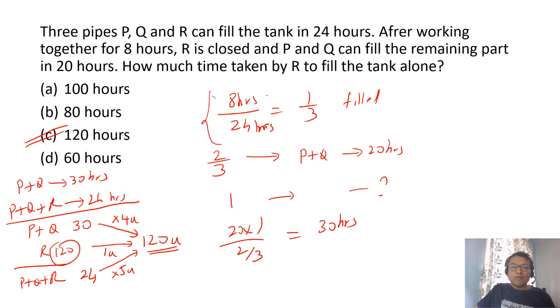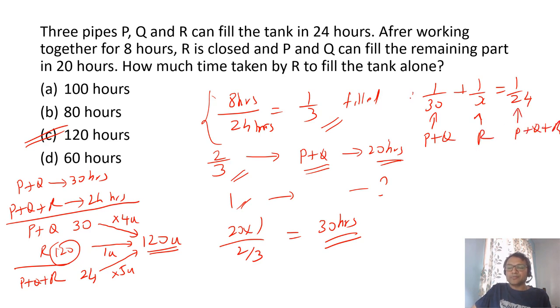So first, when all three of them work, one third is filled. Then P and Q fill the remaining two third in 20 hours. So complete tank in 30 hours. So P plus Q can fill a complete tank in 30 hours. All three can fill in 24 hours. Then you can use LCM method or any other method you're comfortable with. You can also do 1 upon 30 plus 1 upon X equal to 1 upon 24 where 30 is for P and Q. This is for R and this is for P plus Q plus R.